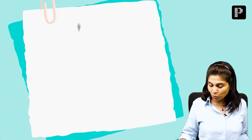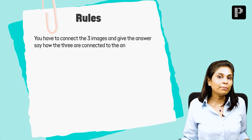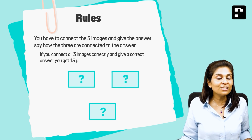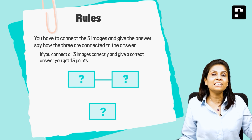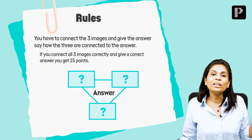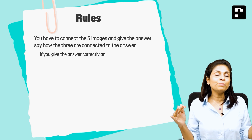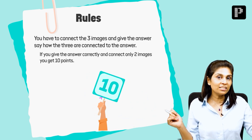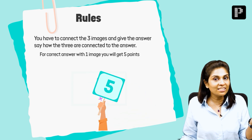A quick recollection of the Connectron rules: I will be showing you three images. You're supposed to find out an appropriate process, technique, or disorder which connects all three images, in which case you get 15 points. If you know the right answer but are able to connect only two images, you get 10 points. If you can connect only one image, you get 5 points.